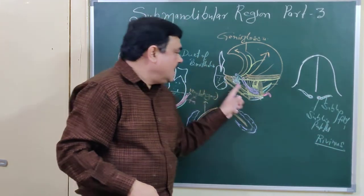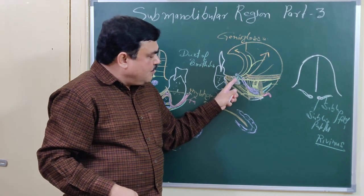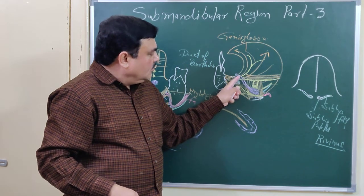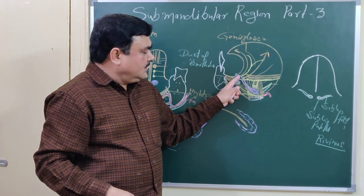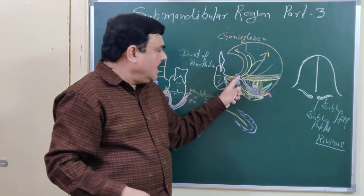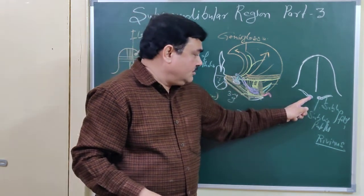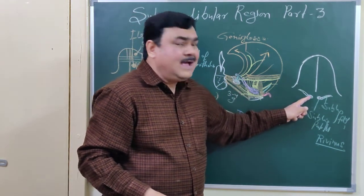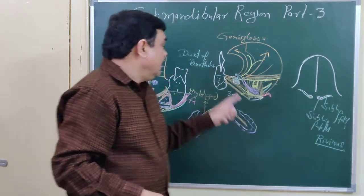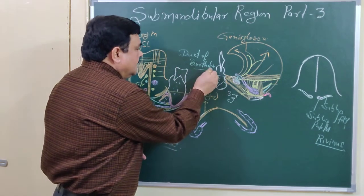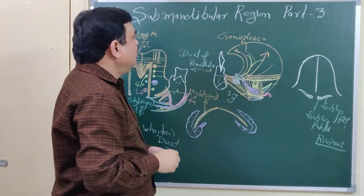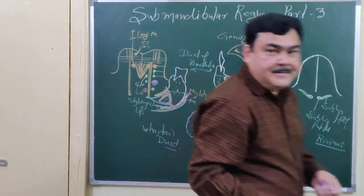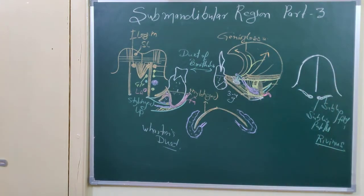Some ducts of the sublingual gland open through a duct initially into the submandibular duct — these are known as the Bartholin's duct. So this is all about part three of the submandibular region.